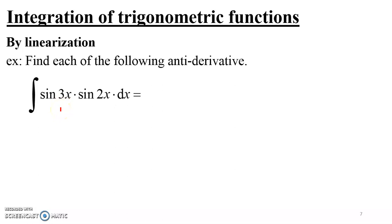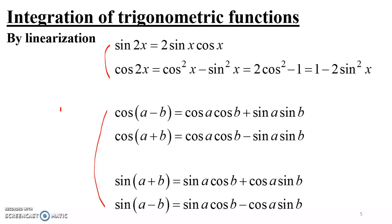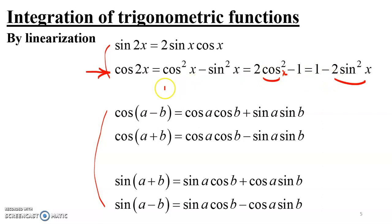How does linearization work? The double angle formula of cosine includes powers of cosine and sine — specifically cosine squared and sine squared. So whenever you have a power of a trigonometric function inside your integral, you linearize it using the double angle formula of cosine.